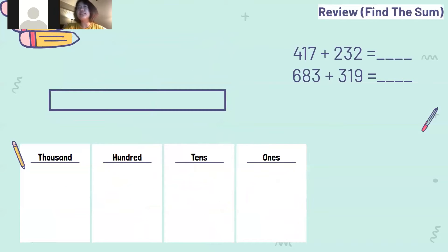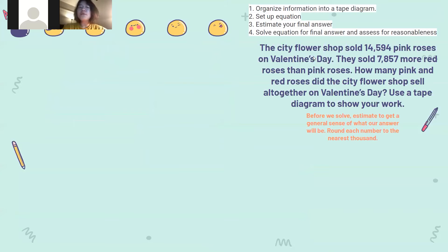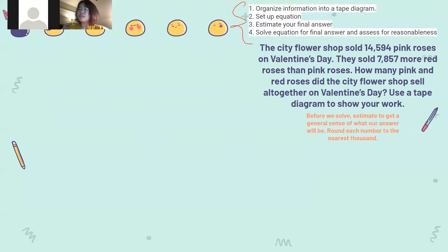After we finish these review lessons, I think we're ready to start our new lesson. So when we're trying to solve an addition word problem, we want to make sure to follow these four steps. The first one is: organize information into a tape diagram. The second step is: set up an equation. The third one is: estimate your final answer. And the fourth one is: solve the equation for the final answer and assess for reasonableness.